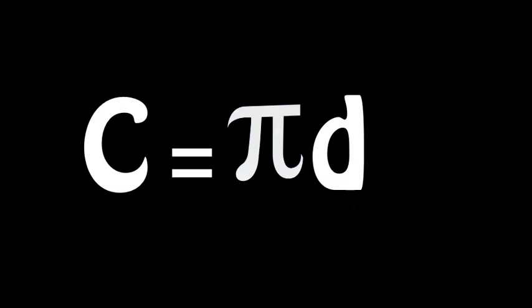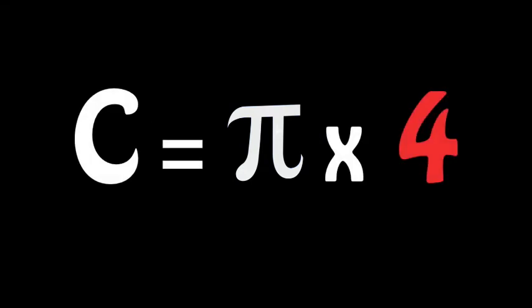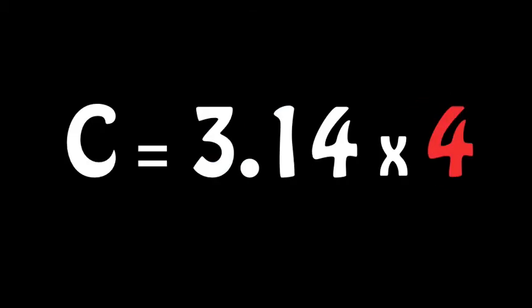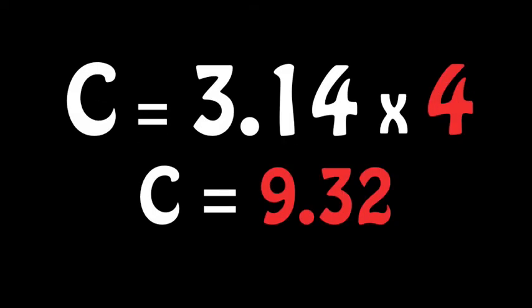Now we're ready to use our formula to find the circumference. Replace the D with 4 since that is the diameter of the circle. Replace the symbol for PI with 3.14. And multiply them together. The answer is a circumference of 9.32.